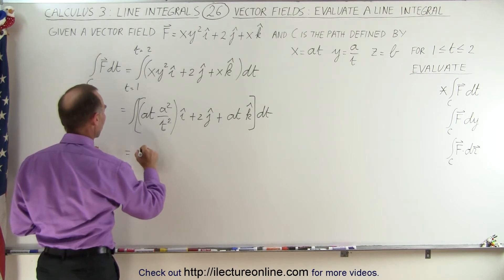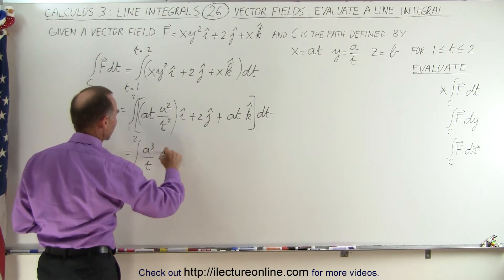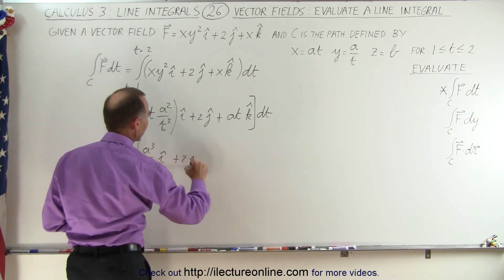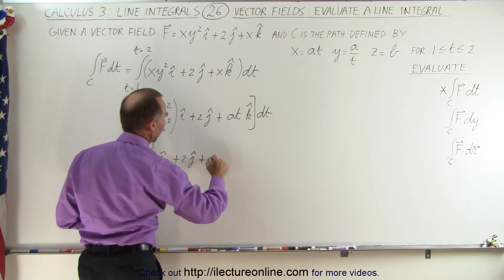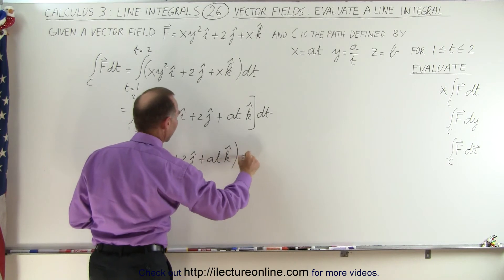So this becomes the integral from 1 to 2 of a³ over t in the i direction, plus 2 in the j direction, plus at in the k direction, and the whole thing times dt.